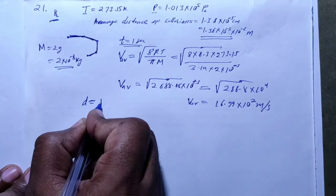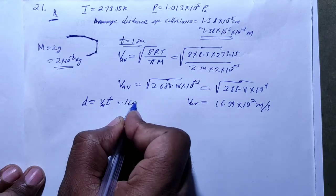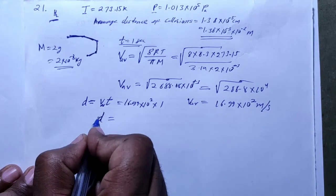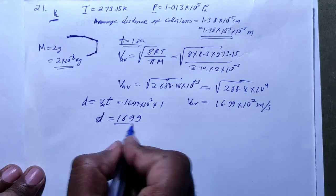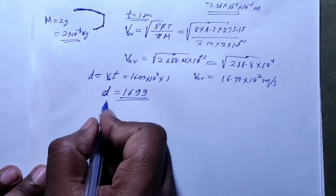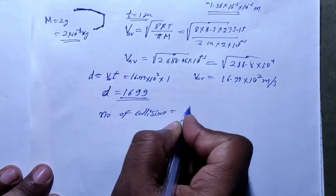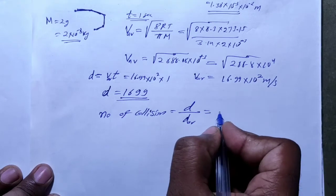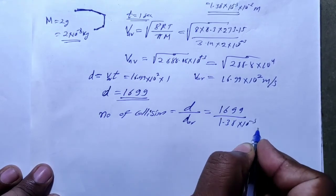Distance equals speed × time. Speed is about 16.99 × 10² m/s. The total path length covered in 1 second equals 16.99 × 10². The number of collisions equals total path length divided by the average distance between collisions. Total path length is 16.99 × 10² and the average distance is 1.38 × 10⁻⁵ m (converting from cm, that is 1.38 × 10⁻⁷ m).